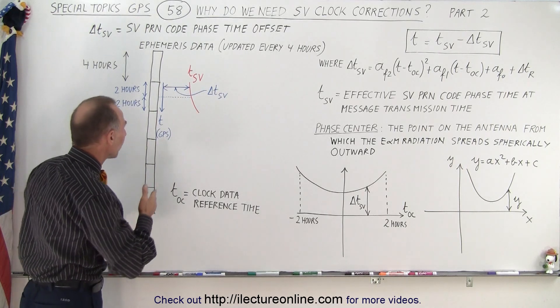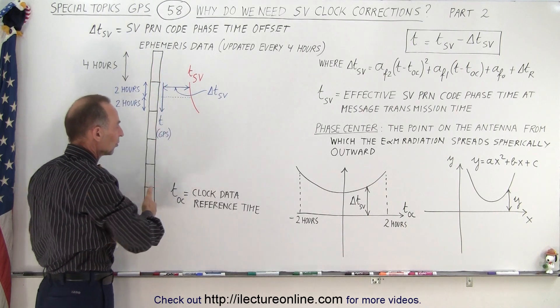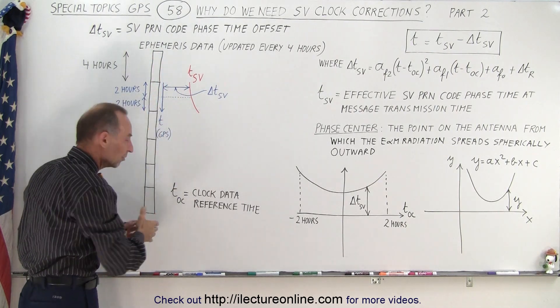So what happens is we have a GPS time that is essentially continuous, the same time just continues to run very accurately, kept by the control center on earth.